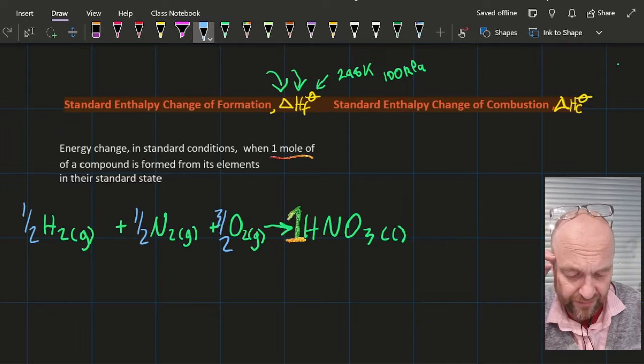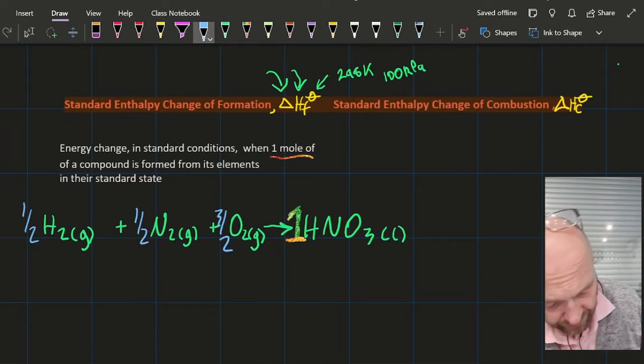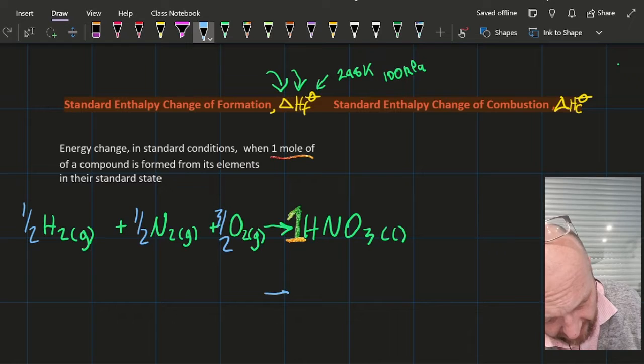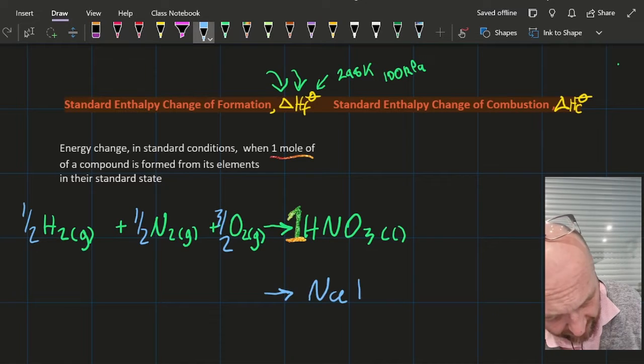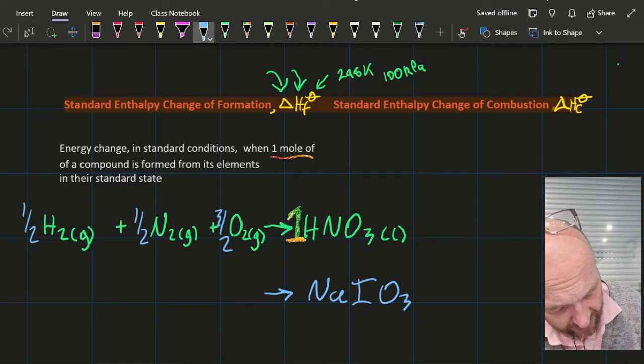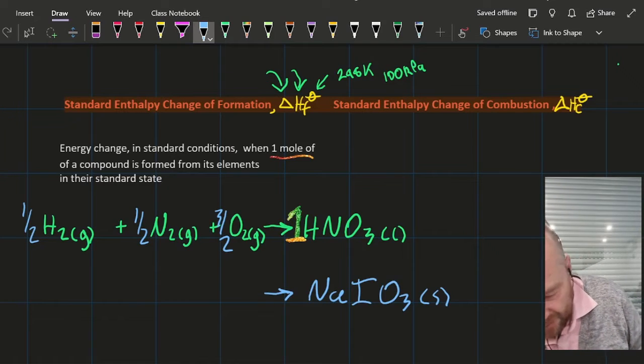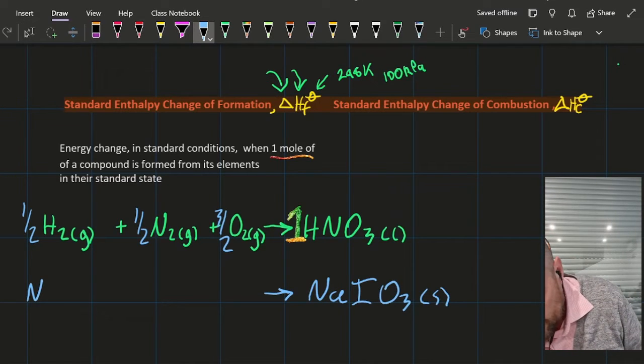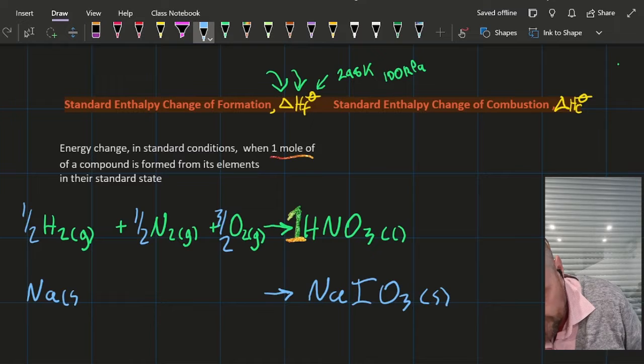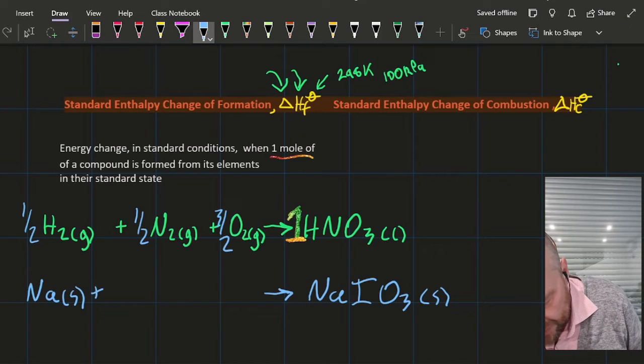Another one they could ask is sodium iodate. That's ionic, so that's going to be a solid—strong bonds. I've got sodium. That's a metal. Metals are solid except for mercury. I've got iodine. That's a solid. Need half of that.